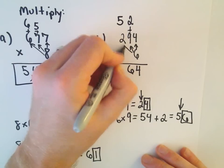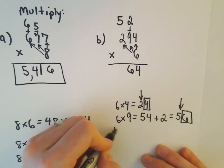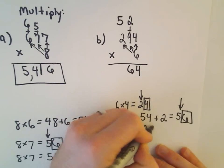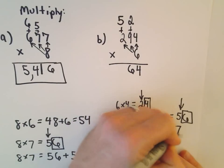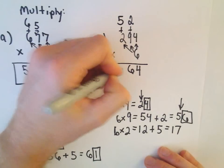And then one last time. So we'll do 6 times 2. 6 times 2 is going to give us 12. And then we add on 5, which is going to give us 17. And that's the number we just dropped down. So it says 294 times 6 is 1,764.